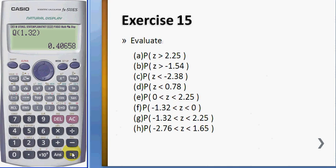And for g, you can calculate it like this: Q of 1.32 plus Q of 2.25, and the answer is 0.8936.